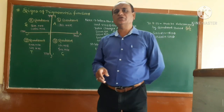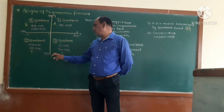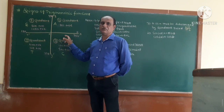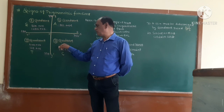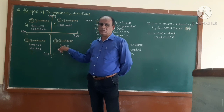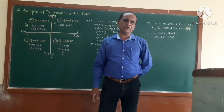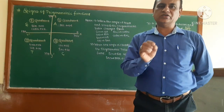Then in the fourth quadrant — from 270 to 360 degrees — cos is positive and sec is positive. The remaining four trigonometric functions are negative in the fourth quadrant.